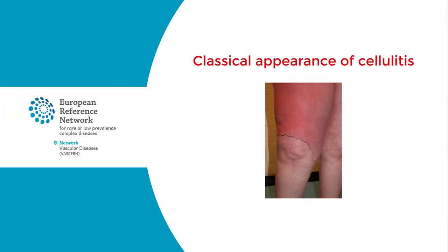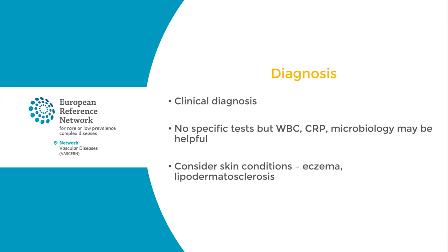This picture shows a classical appearance of cellulitis in a patient with lymphedema of the leg. The diagnosis of cellulitis is a clinical one based on the features just described. There are no specific tests that demonstrate cellulitis, but the white blood count, CRP, and microbiology including blood cultures may be helpful. To confirm the diagnosis, it's important to exclude skin conditions such as eczema and lipodermatosclerosis.